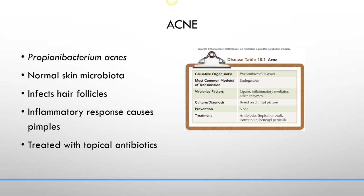If that hair follicle and its surrounding sebaceous gland get infected, and if the person produces certain hormones that promote the development of an environment supporting the growth of these microorganisms, then a pimple forms. In normal circumstances, the sebaceous gland is a holocrine gland, meaning the cells inside grow and eventually rupture, secreting oil on the surface of the skin and in the hair shaft to moisturize everything. In the case of a pimple, the bacteria prevent that rupturing from happening.